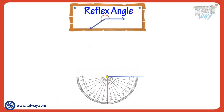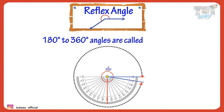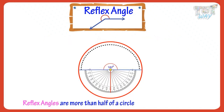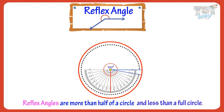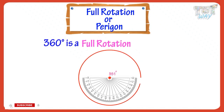Now let's learn what are reflex angles. Angles from 180 degrees to 360 degrees are called reflex angles. Reflex angles are more than half of a circle and less than a full circle. Now let's learn what is a full rotation. A full rotation is also called a full circle.